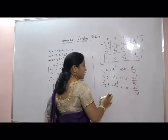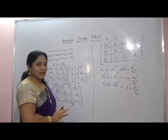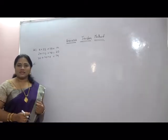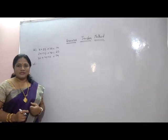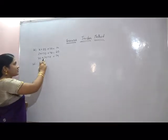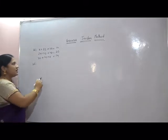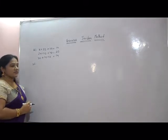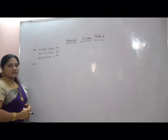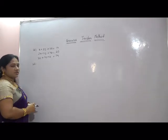In this way, we can find the unknowns using the Gauss-Jordan method. Let me solve one problem for easy understanding. Solve the system: x + 2y + 3z = 14, 2x + 3y + 4z = 20, and 3x + 4y + z = 14 using the Gauss-Jordan method.